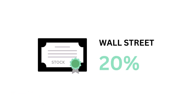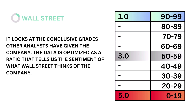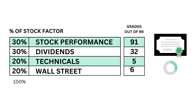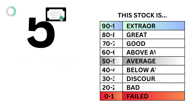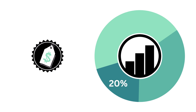Lastly in the stock factor is Wall Street, which accounts for 20%. Wall Street looks at the conclusive grades other analysts have given the company. The data is optimized as a ratio that tells us the sentiment of what Wall Street thinks of the company. The models tell us that a Wall Street ratio of 3 is considered average. Here's our Wall Street ratio and Wall Street grade. To recap, here are the four metric grades, and when we put them together we get our stock grade.